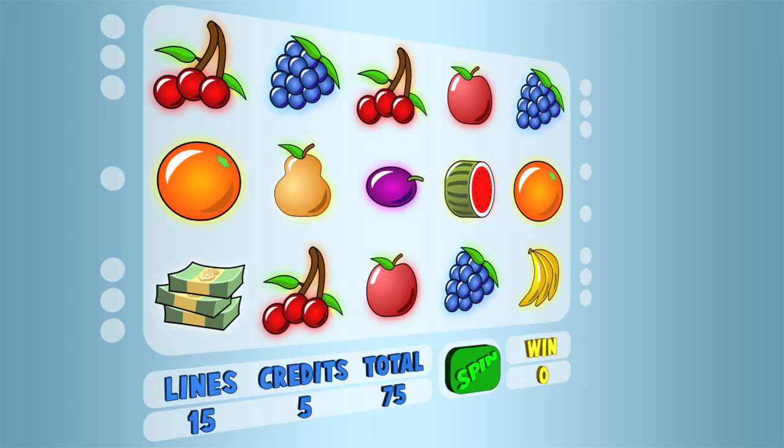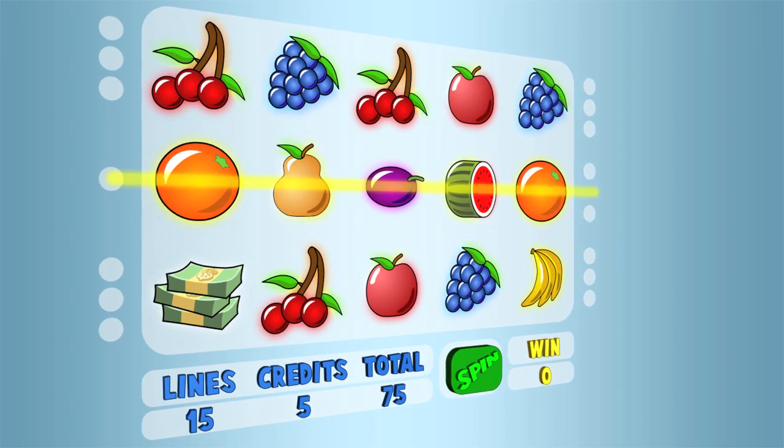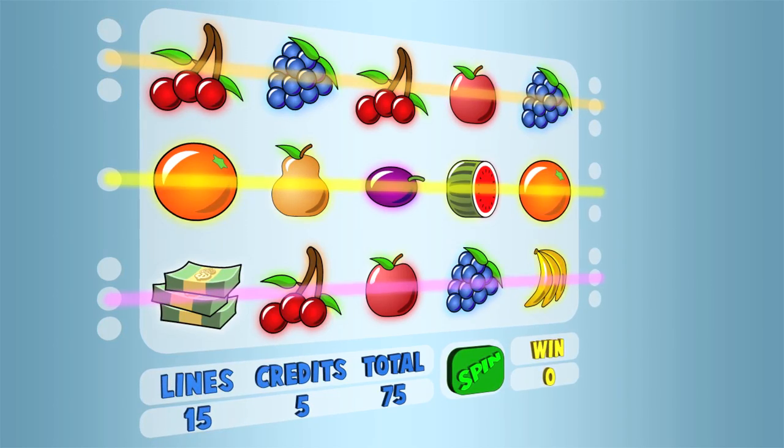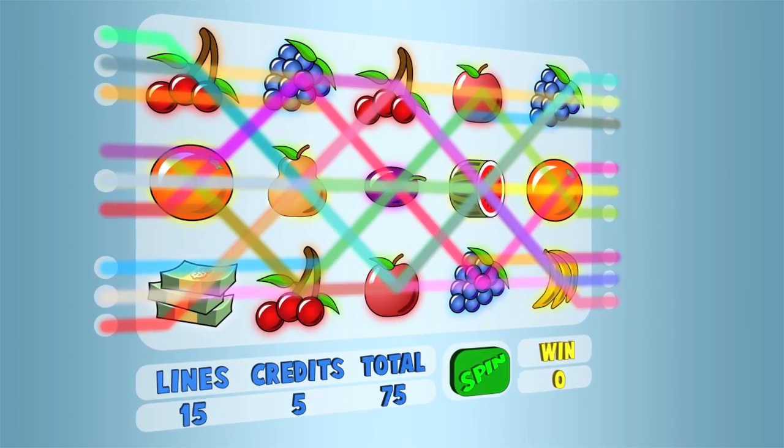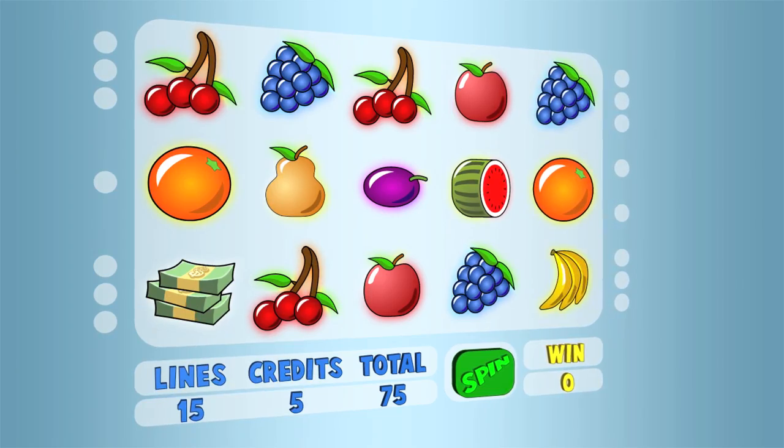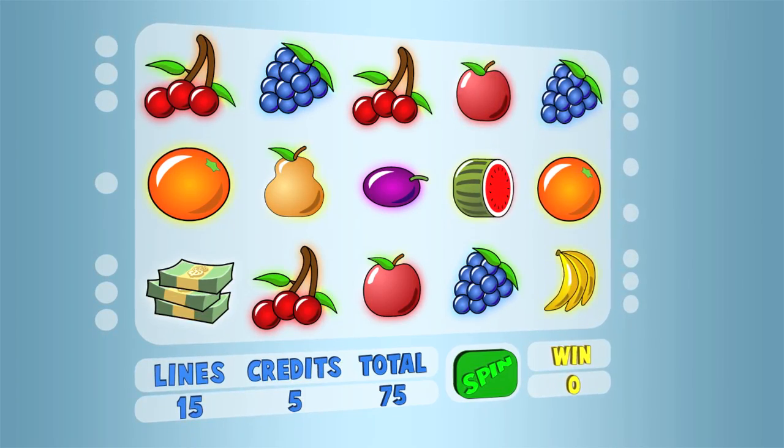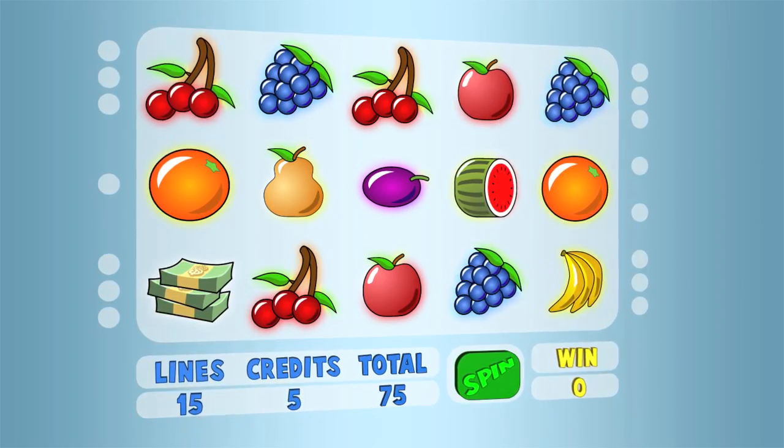On modern slot machines, players can wager on more than one line, such as 3, 5, or 15 lines. On these multi-line games, a loss disguised as a win occurs when the payback on a spin is less than the amount wagered.